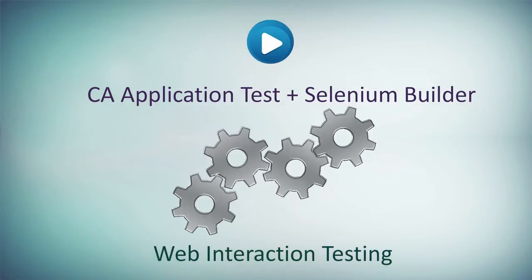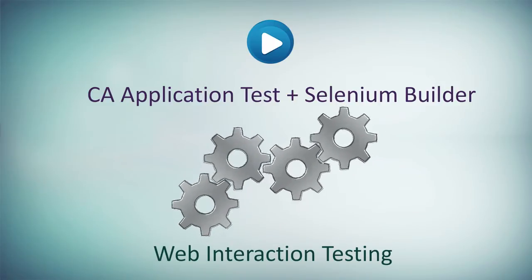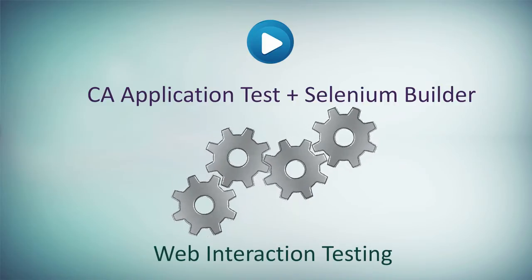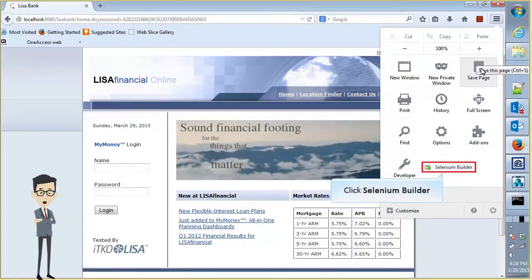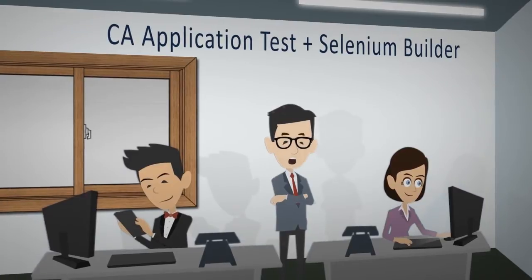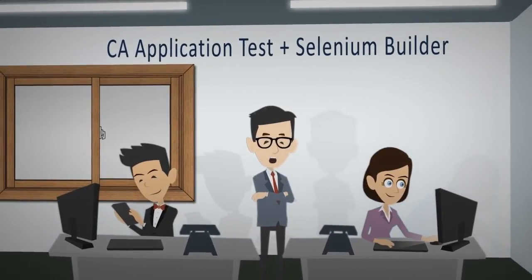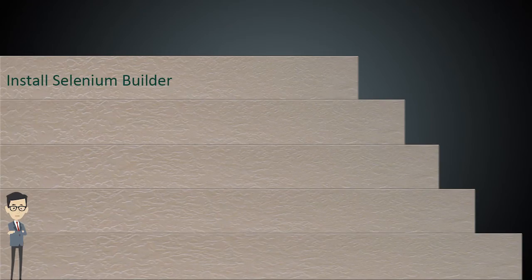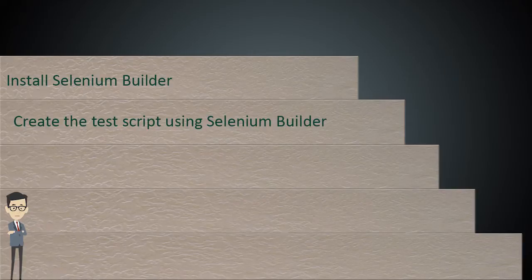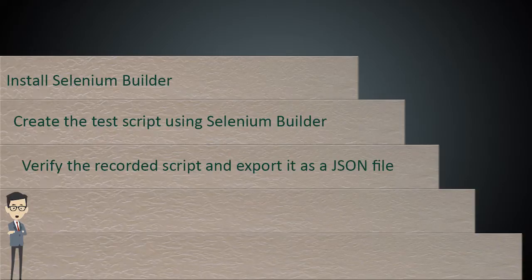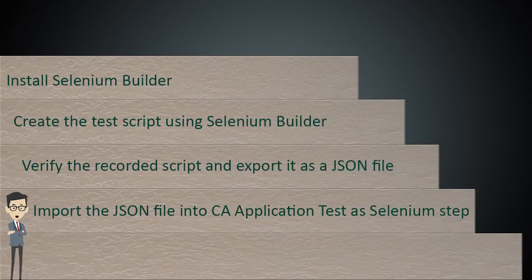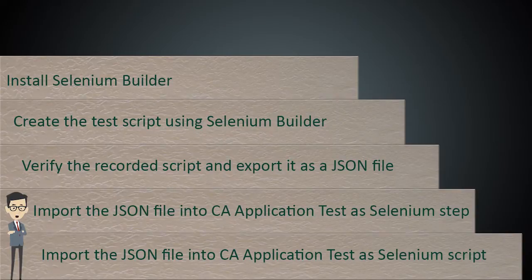Watch this demonstration to learn how you can integrate CA Application Test with Selenium Builder to create automated web interaction testing. Selenium Builder is a Firefox add-on that allows you to record actions in a web-based user interface and create Selenium tests. If Selenium Builder is not installed, you need to download and then install it. To integrate the Selenium test script in CA Application Test, you need to: first, install Selenium Builder; then create the test script using Selenium Builder; after that, verify the recorded script and export it as a JSON file; and finally, import the JSON file into CA Application Test as a Selenium step or Selenium script and then execute the test.